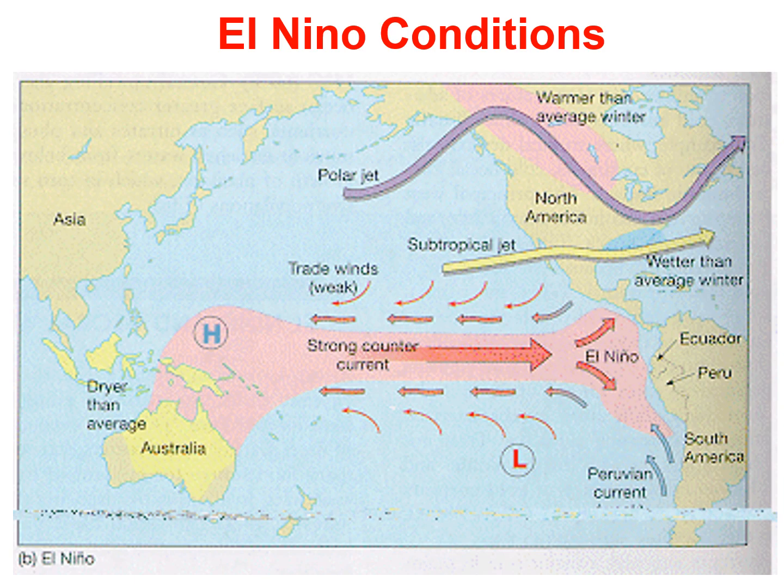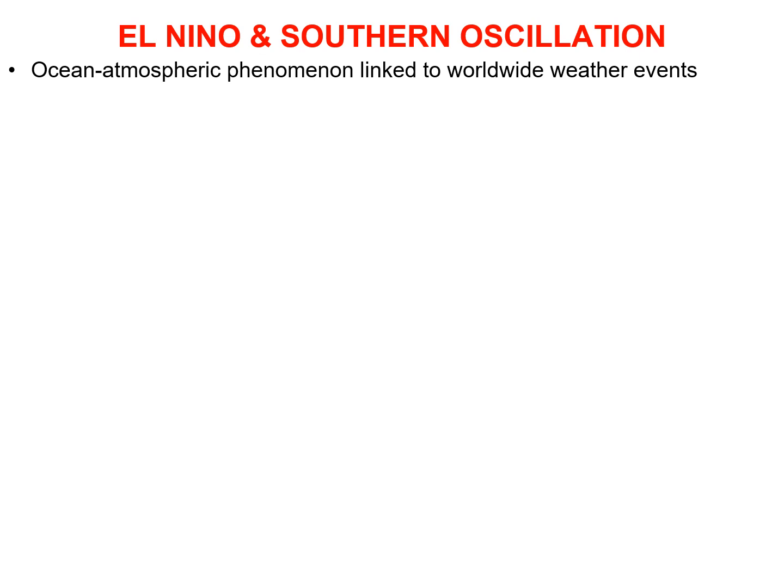For example, during exceptionally warm El Niños, drought is normally felt in Indonesia, southern Africa, and Australia, while heavy rains and flooding often occur in Ecuador and Peru. In the northern hemisphere, a strong subtropical westerly jet stream typically deflects storms into California and brings heavy rain into the Gulf Coast states. Sometimes the damages due to flooding, winds, and mudslides may result in billions of dollars of damages.